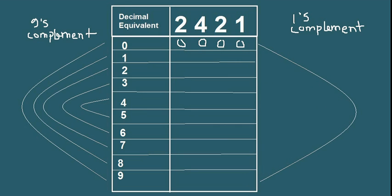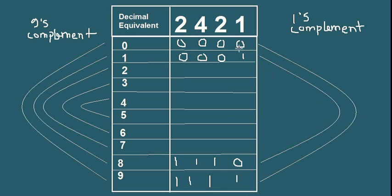For 0, the 2421 code is 0000 and its 1's complement is 1111. For 1, the 2421 code is 0001 and its 9's complement 1's complement is 1110. For 2, the 2421 code is 0010 and its 9's complement 1's complement will be 1101. For 3, it's 0011 and its 9's complement 1's complement is 1100.